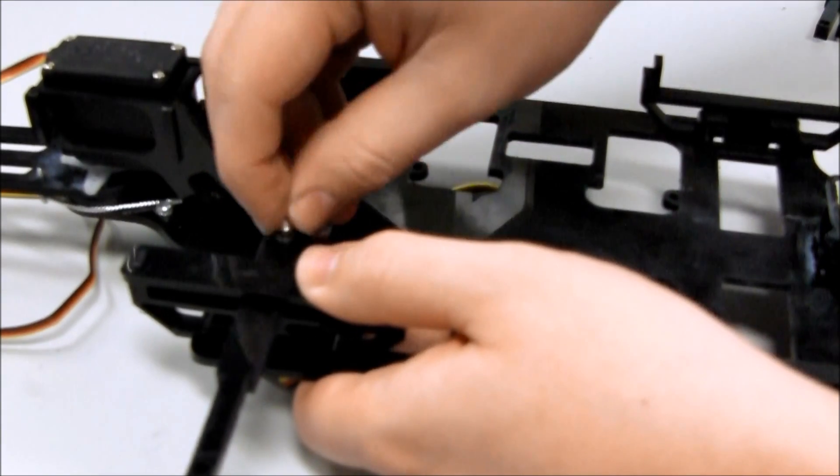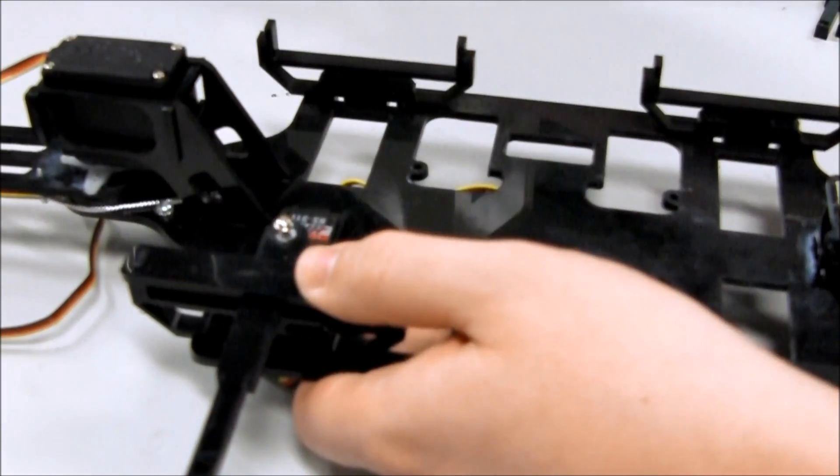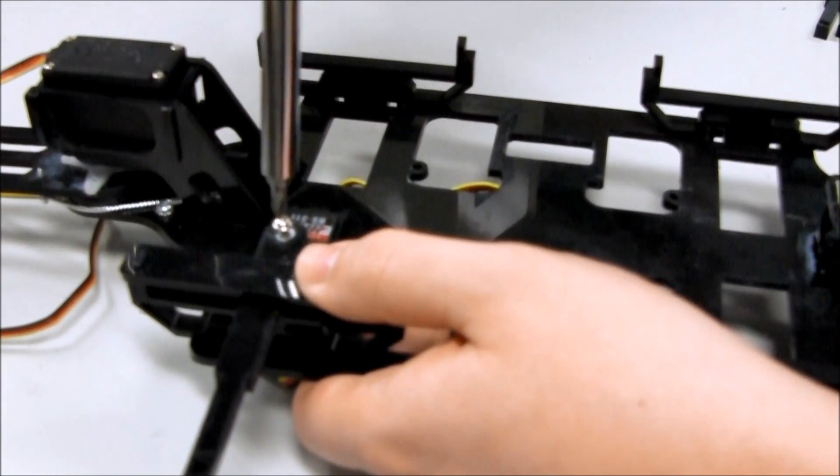Once again, take one of the steel shoulder screws from the servo packaging and screw it into the arm joint to act as a bearing.